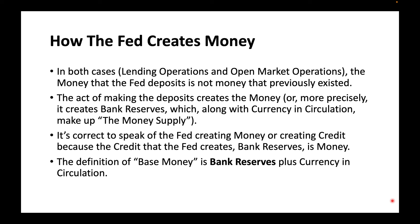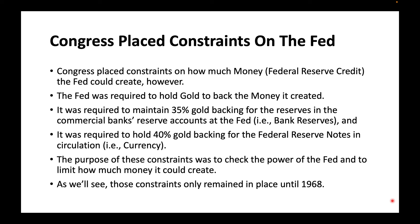The definition of base money is bank reserves plus currency in circulation. Congress placed constraints on how much money — how much Federal Reserve credit — the Fed could create. The Fed was required to hold gold to back the money it created. It was required to maintain 35 percent gold backing for the reserves in the commercial banks' reserve accounts at the Fed — in other words, for bank reserves. And it was required to hold 40 percent gold backing for the Federal Reserve notes in circulation — in other words, the currency.